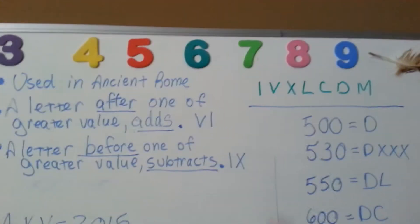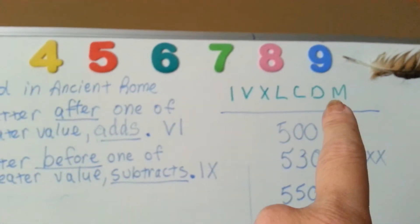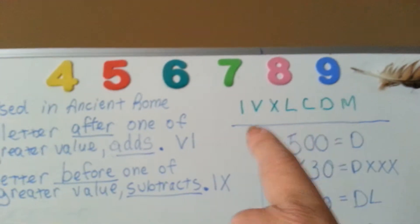The way it works is there's an I, V, X, L, C, D, and an M. And each one stands for an increment of value.